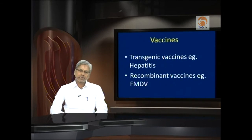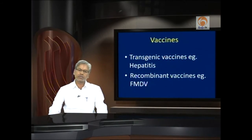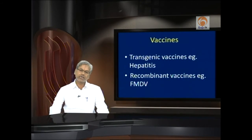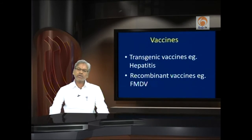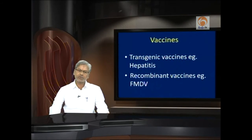Some vaccines are produced artificially — synthetic vaccines, as in the case of flu and rabies. Transgenic vaccines are also being produced effectively; for example, the hepatitis vaccine is a transgenic vaccine. In addition, recombinant vaccines are also being developed, as in the case of vaccination for FMDV.